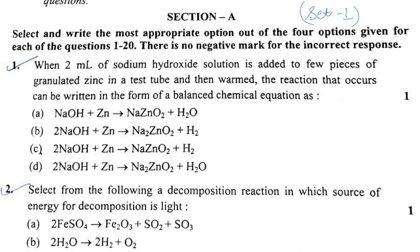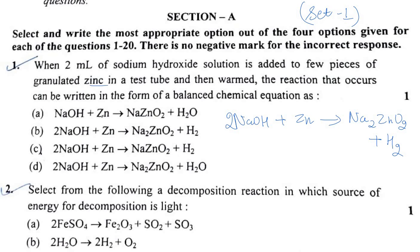Question 1: 2 ml of sodium hydroxide solution is added to zinc in a tube, then the reaction is warmed. The balanced chemical equation is: NaOH + Zn → Na2ZnO2 (sodium zincate) + H2. Balancing both sides gives a coefficient of 2, with zinc and oxygen already balanced. So option B is the answer.